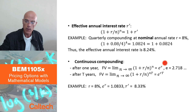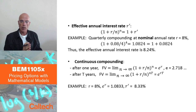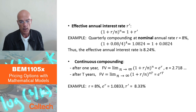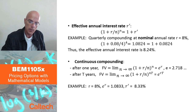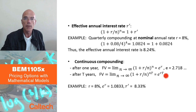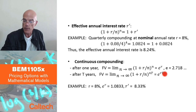By definition, if I say interest is continuously compounded at rate r, for each dollar after one year you will have e^r dollars. After T years, you raise this to the power T, giving e^(rT). So if r is the continuously compounded interest rate, you will have e^(rT) dollars for each dollar initially invested.